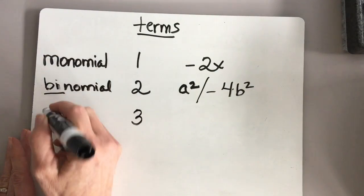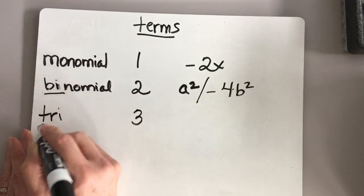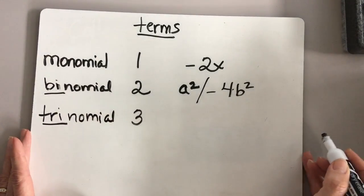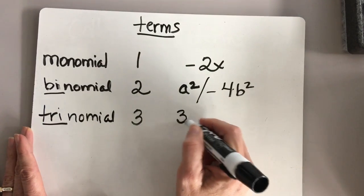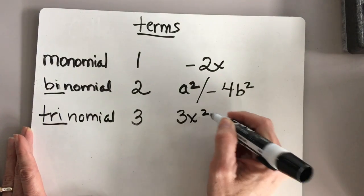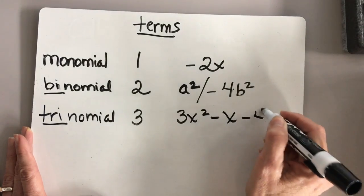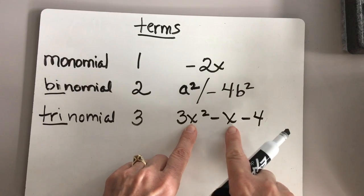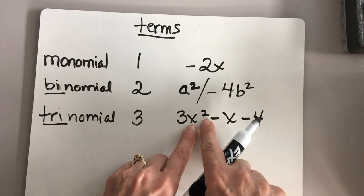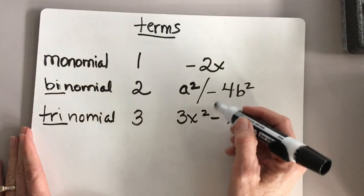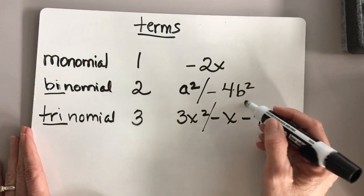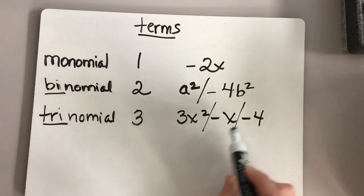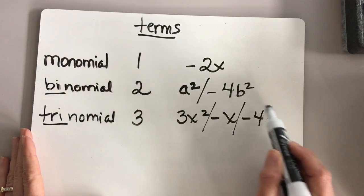Let me show you an example of three terms. This is called a trinomial — tri meaning three. An example like that would be 3x squared minus x minus 4. Three different terms. Even though we have an x here and an x here, this is an x squared and this is just a plain x. I'll use a slash mark to show you that we separate these terms: this is one term, this is a different term, and this is another term.